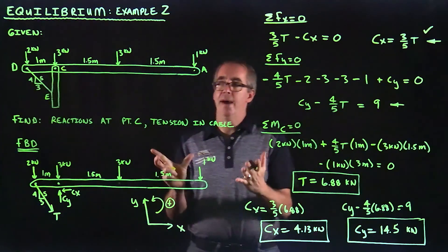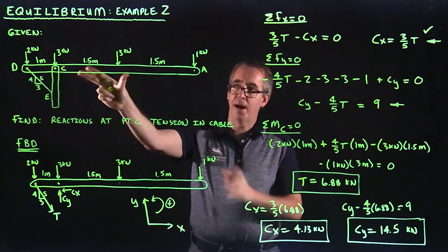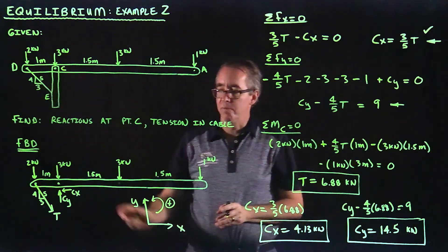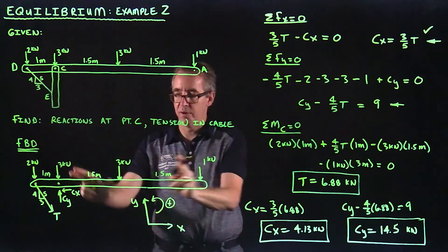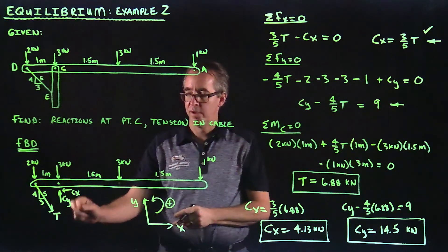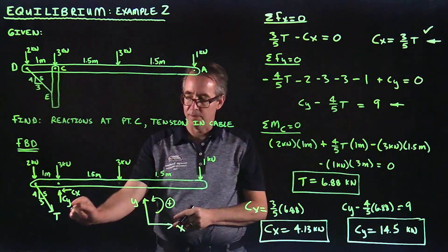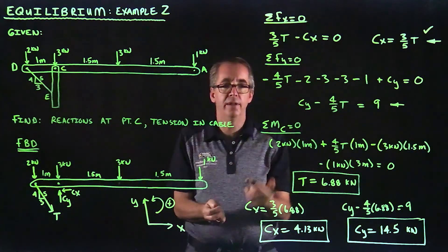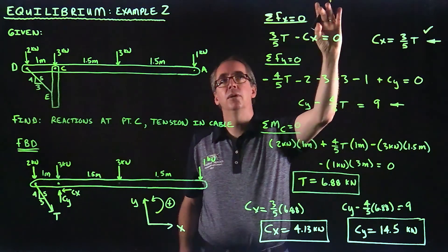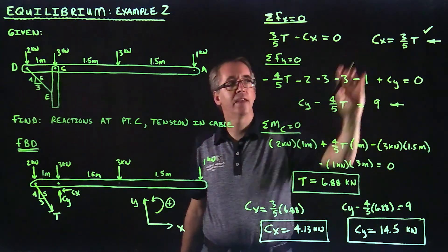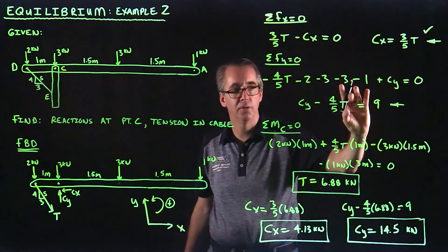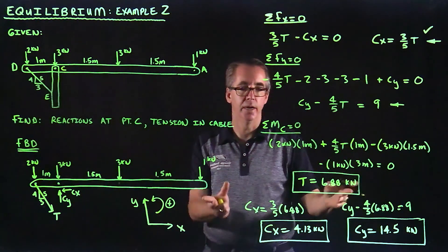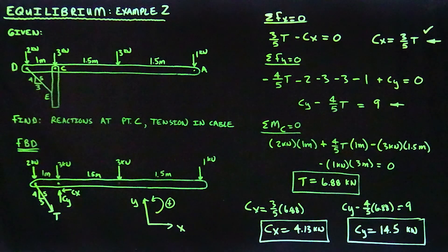Just to recap, we took this complicated problem statement. We simplified it with a clear free body diagram in which we identified the concentrated forces, the distances. We have the reactions at point C, Cx and Cy. We have our tension, our reference axes. Then we just applied the three equilibrium equations that we had. This gave us an expression for Cx, an expression for CY in terms of T. Then we took the moment at one point to solve for the three unknowns. That concludes this example. Thank you.